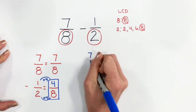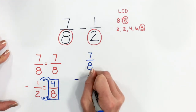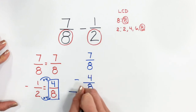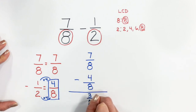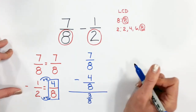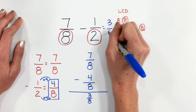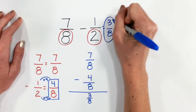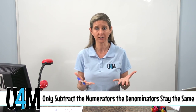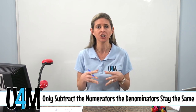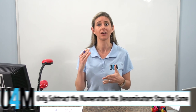So let's go ahead and rewrite it and subtract. Seven-eighths minus four-eighths will give me three-eighths. Coming back up to the original problem, seven-eighths minus one-half equals three-eighths. So we can see that the steps for subtracting unlike fractions are the same as when we add unlike fractions. The most important part is that we have our least common denominator, and then when we subtract those fractions, the denominator stays the same — we're only subtracting those numerators.